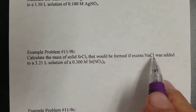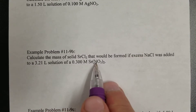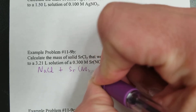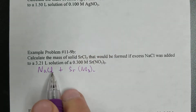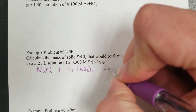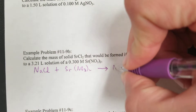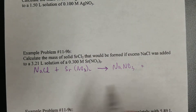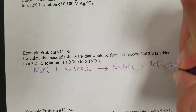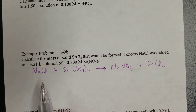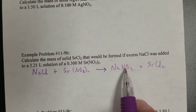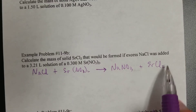Balanced equation: excess NaCl is added to a solution of Sr(NO₃)₂ — that's sodium chloride and strontium nitrate. It's a double displacement reaction, so the sodium pairs with the nitrate, and strontium pairs with chlorine. Sodium is a 1+, nitrate is a 1−, that's the correct formula. Strontium is a 2+, chlorine is a 1−, that's the reason for that formula.